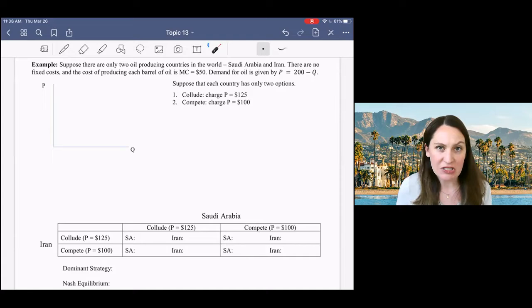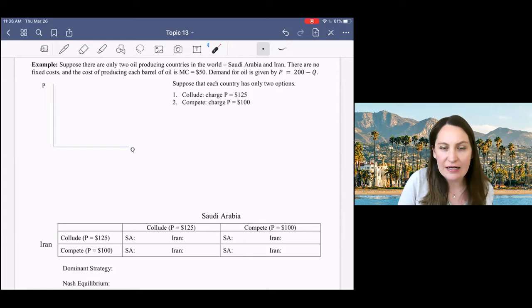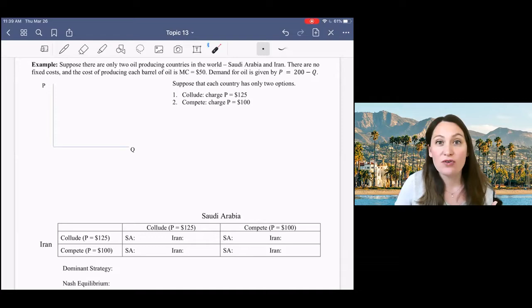You'll remember that in prisoner's dilemma, the prisoners, Bonnie and Clyde, had two options. They could stay silent or they could confess. In this context, when we're talking about firms, they're going to have a choice between colluding, working together with the other firms or other countries in this example, or they can compete with each other. So the best outcome in terms of profit for the entire market will be if the firms work together, if they collude, to charge the monopoly price.